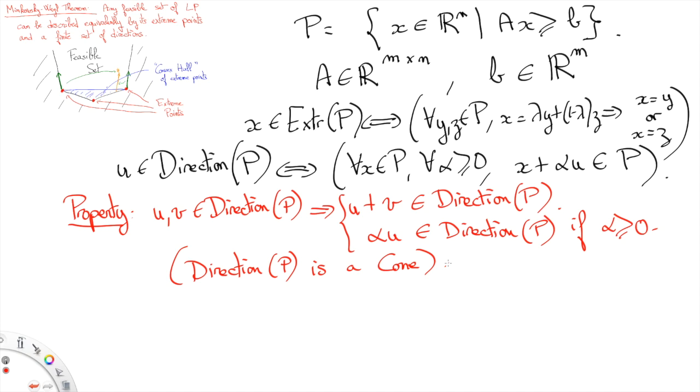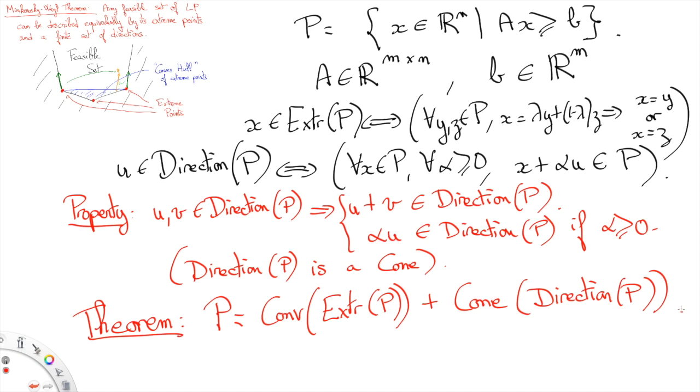Fourth and finally, what is meant when we say that the extreme points and directions are equivalent representations of the polyhedron P, is that any point x in the polyhedron P can be written as a convex combination of the extreme points plus a linear non-negative combination of the directions. In other words, there is a finite set D of directions such that for any x in P,